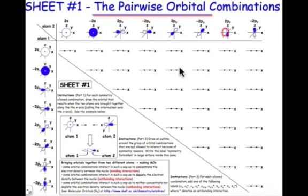And there are destructive as well as constructive regions of overlap. They're equal and they're opposite, and so they cancel one another. No net overlap. The combination is disallowed.